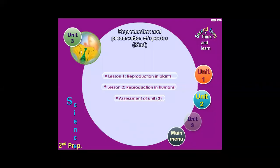Dear students, we will start Unit 3: reproduction and preservation of species or kind. Reproduction means the biological process by which a living organism can produce new individuals of the same kind, and thus ensure its existence and protect itself from extinction.